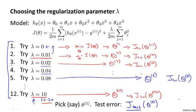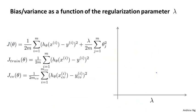So that's model selection applied to selecting the regularization parameter lambda. I'd also like to get a better understanding of how cross validation and training error vary as we vary the regularization parameter lambda. We define training error and cross validation error without using the regularization parameter, and plot J_train and J_cv — how well the hypothesis does on the training set and cross validation set — as I vary lambda.